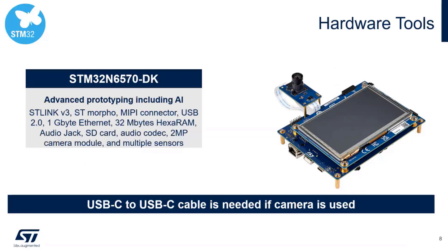Here is the tool we are going to use today — it's an STM32N6 discovery kit. It's already available online and it's a great way to start evaluating this new chip. It integrates all the hardware you need to test the N6 capabilities to their maximum, including external flash, integrated RAM, a camera module, ST-Link for debugging, and an audio codec. One important note: if you want to use the camera module, you need to use a USB-C to USB cable to provide the proper supply level.